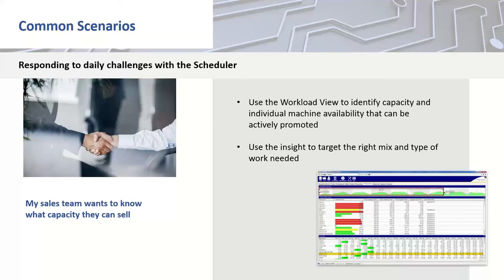Scenario five: for businesses with various capacity types — plating, milling, turning, deep hole boring — where the sales team is focused on selling available capacity. How can they see what capacity is available to sell? We have two modules — viewer and simulation — which give sales teams access to all the data the master planner can see without being able to change the live schedule. They can view the workload view showing which resources are overutilized and which are underutilized, then focus on getting work in for underutilized resources and be aware that taking more work for overutilized resources will cause delivery problems. This helps mix and target the right type of work to maximize capacity utilization.